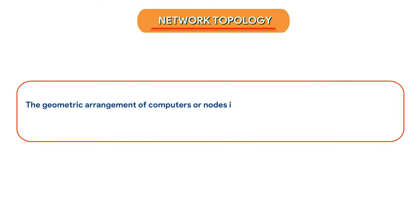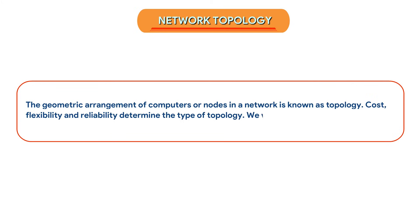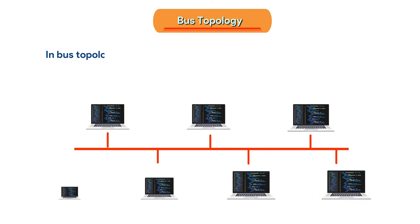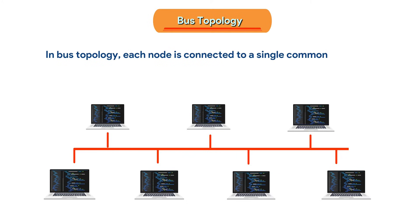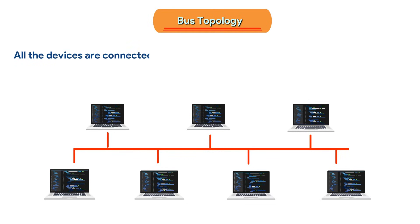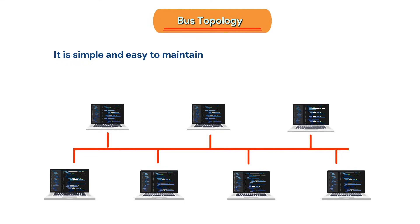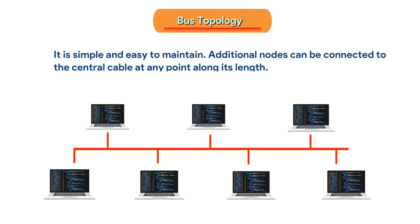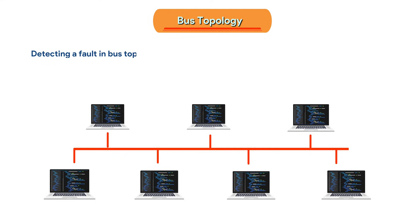Network Topology: The geometric arrangement of computers or nodes in a network is known as topology. Cost, flexibility, and reliability determine the type of topology. In BUS Topology, each node is connected to a single common path. All devices are connected through one central network cable or coaxial cable. It is simple and easy to maintain, and additional nodes can be connected at any point. However, detecting a fault in BUS Topology is very difficult, which is its major disadvantage.